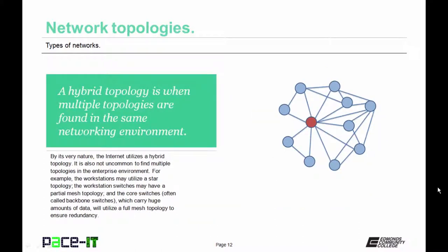Let's talk about what a hybrid topology is. It's when there are multiple topologies found in the same networking environment. By its very nature, the internet utilizes a hybrid topology. It's also not uncommon to find multiple topologies in the enterprise environment. For example, the workstations may utilize a star topology, while the workstation switches may have a partial mesh topology between them. Then there are the core switches, often called backbone switches. These carry huge amounts of data and will often utilize a full mesh topology to ensure redundant connections and create fault tolerance. All of these can be found in the same networking environment, creating a hybrid topology.